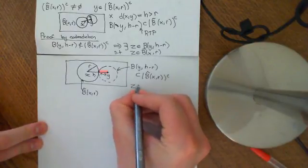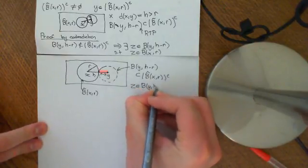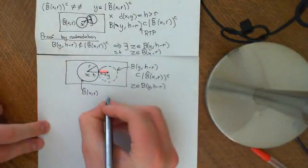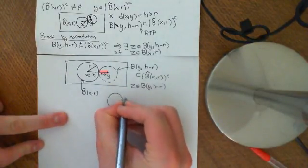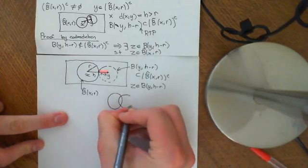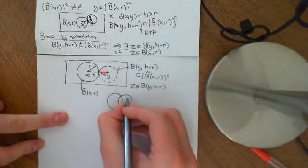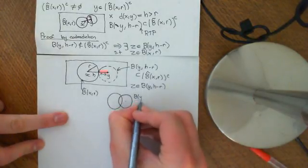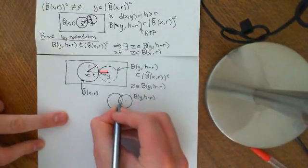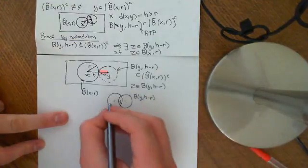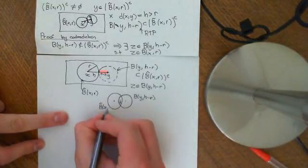So we have some Z which is an element of this open ball B(Y, H minus R). To draw another picture — if we have the closed ball here, what we are now assuming is that this open ball, which should be drawn dashed, is the open ball around Y of radius H minus R, and we're assuming that there is some point Z which is in both of them. We're going to show that this leads to a blatant contradiction.